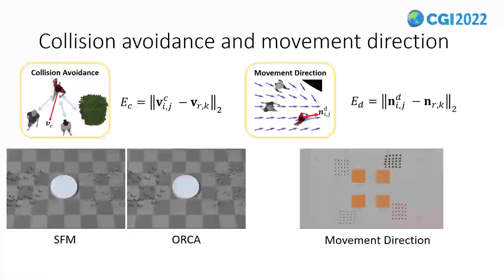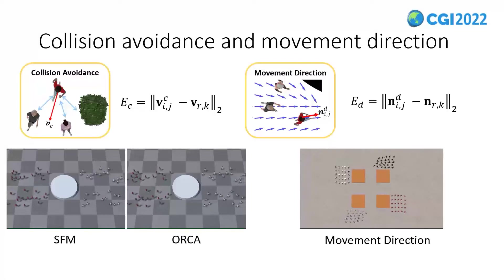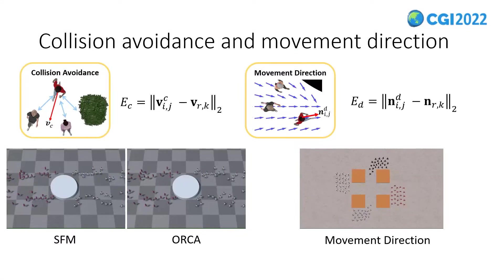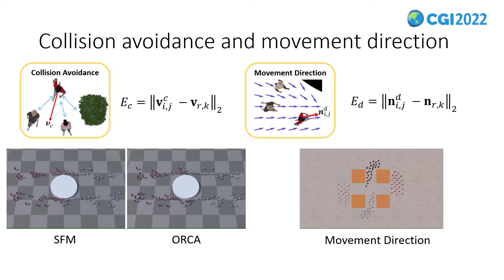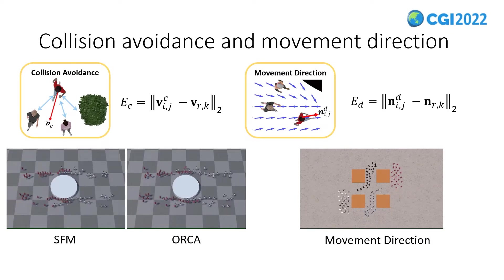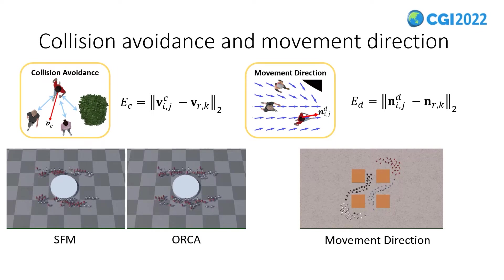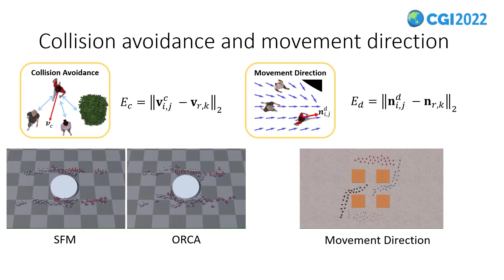Collision avoidance is introduced to preserve the agent's safe distance with its neighbors and static obstacles during movement. Movement direction is introduced for global navigation, which guides the agent's movement toward its goal. We compute the collision-free velocity by using local collision avoidance algorithms, such as SFM and ORCA.